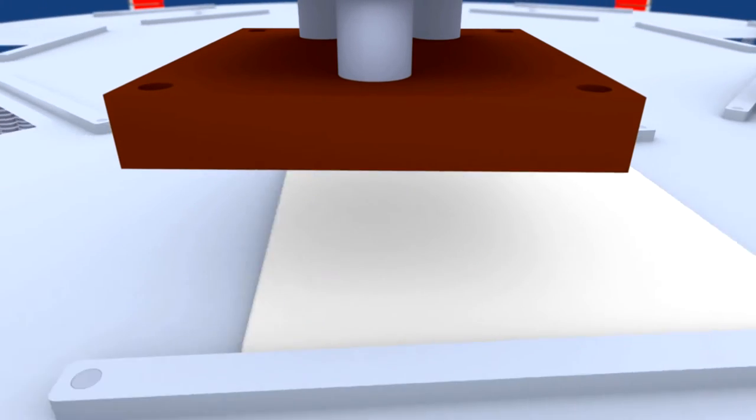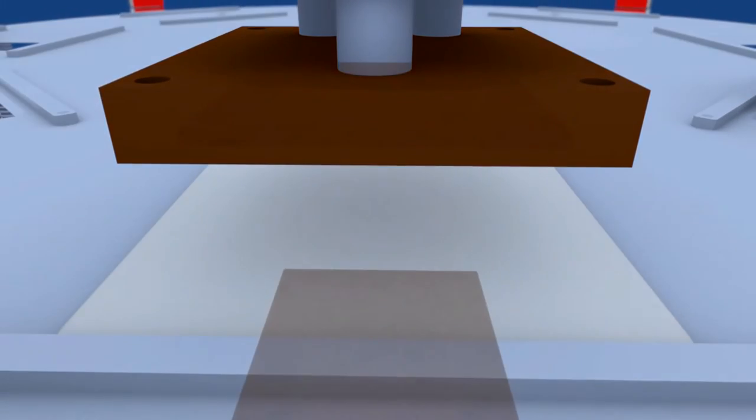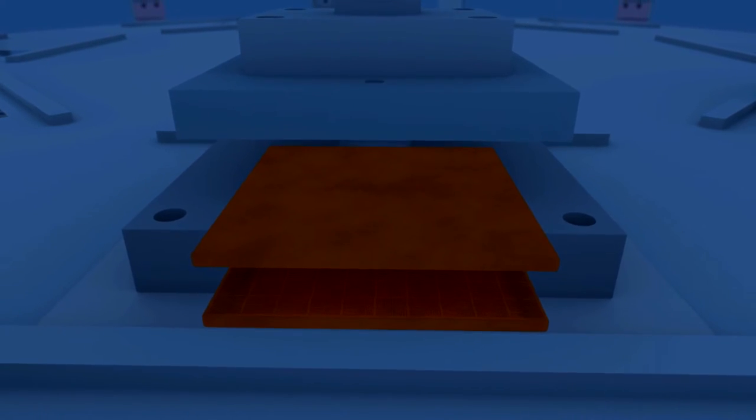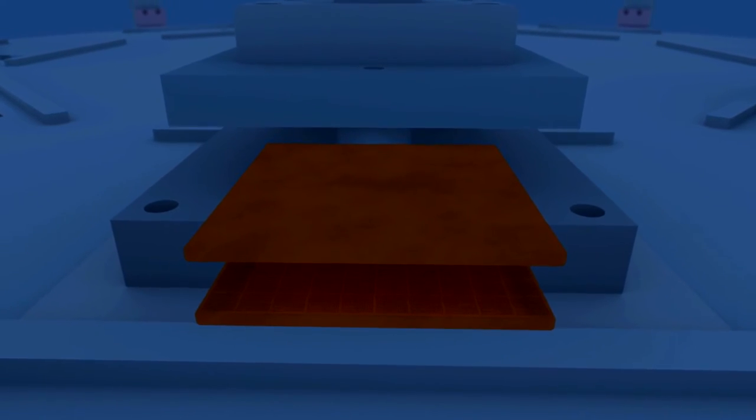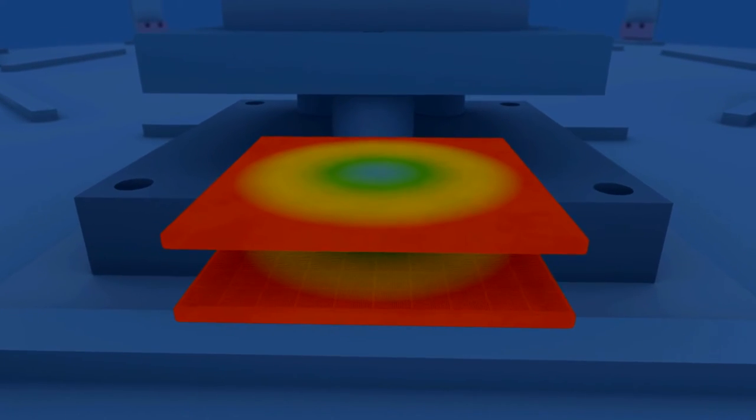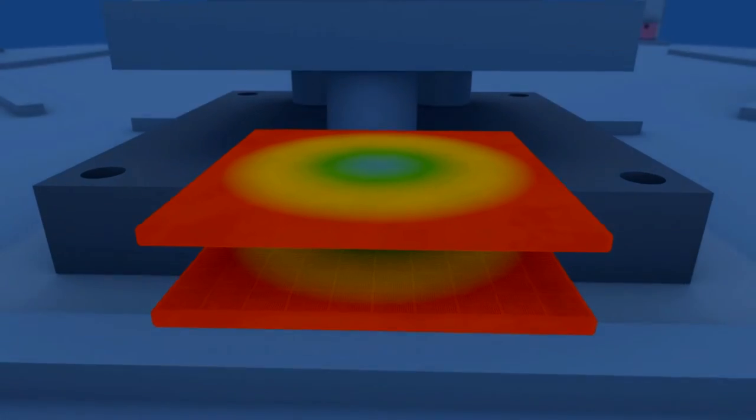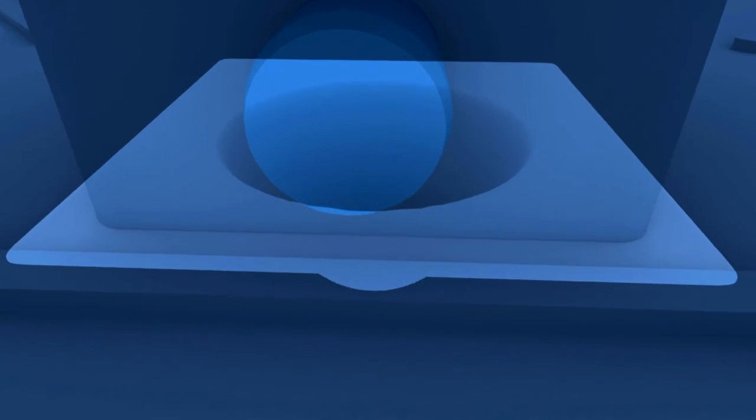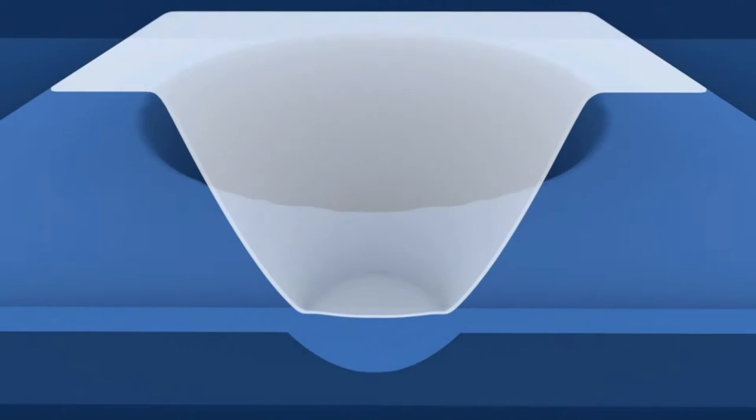The newly developed matrix heater has the advantage of heating the foil with the help of a so-called temperature field. The cup now has higher temperatures on the outside and lower temperatures in the middle. Thanks to this differentiated temperature field, the flow behavior of the plastic foil is optimized for the given mold.